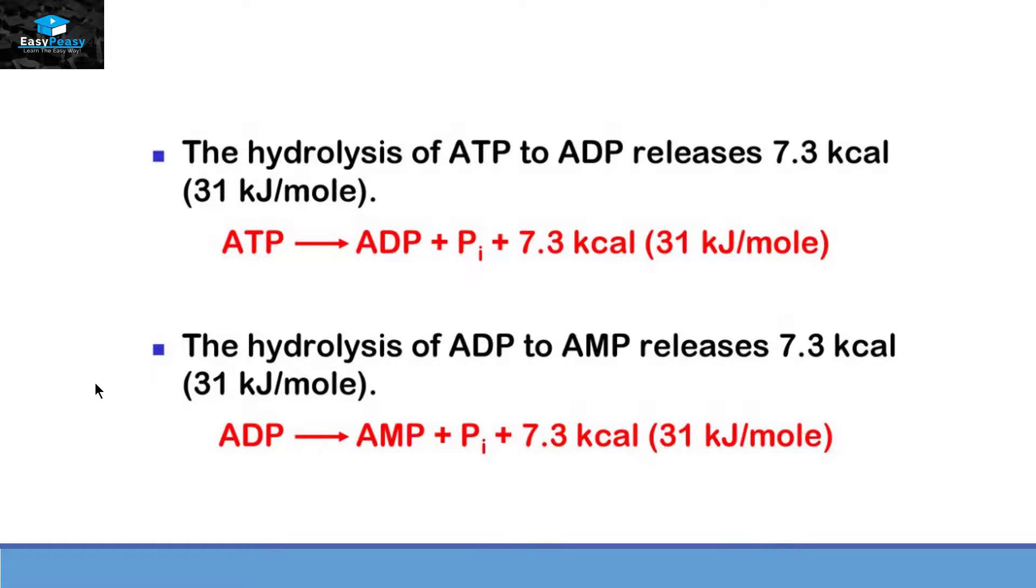A single ATP molecule can release this energy twice by converting from ATP to ADP and then this ADP can convert itself into AMP that stands for Adenosine Monophosphate by releasing the same amount of energy and that is 7.3 kilocalories.